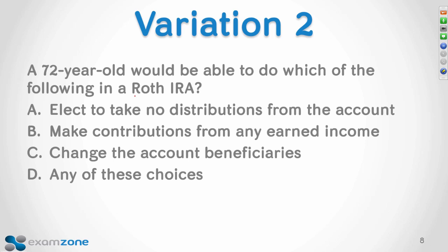Another variation: 'A 72-year-old would be able to do which of the following in a Roth IRA?' Notice they're over 70½. Unlike a traditional where you have to start taking money out, in a Roth the 72-year-old can take no money out and even put money in as long as she has earned income. The answer is likely D — all of the above. Writing this variation teaches you two key facts: no required minimum distributions in a Roth, and you can still contribute at 72 if you have earned income.